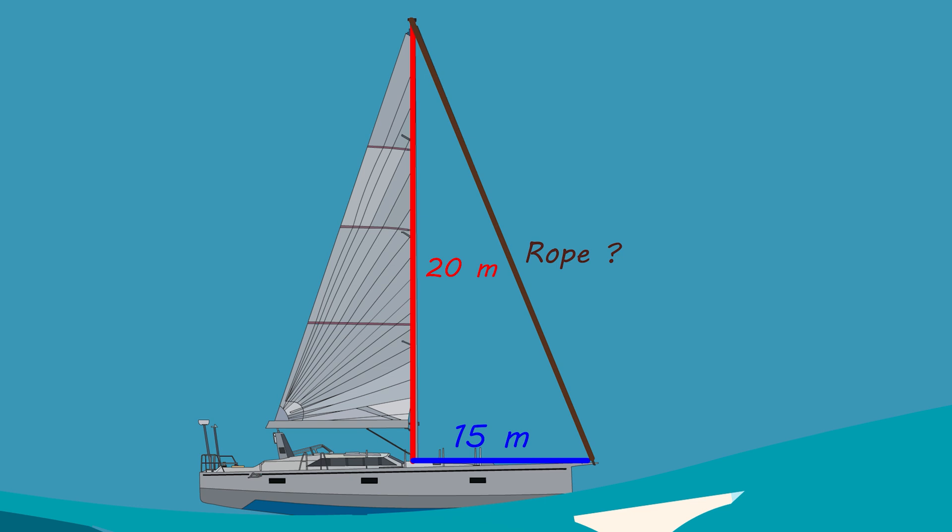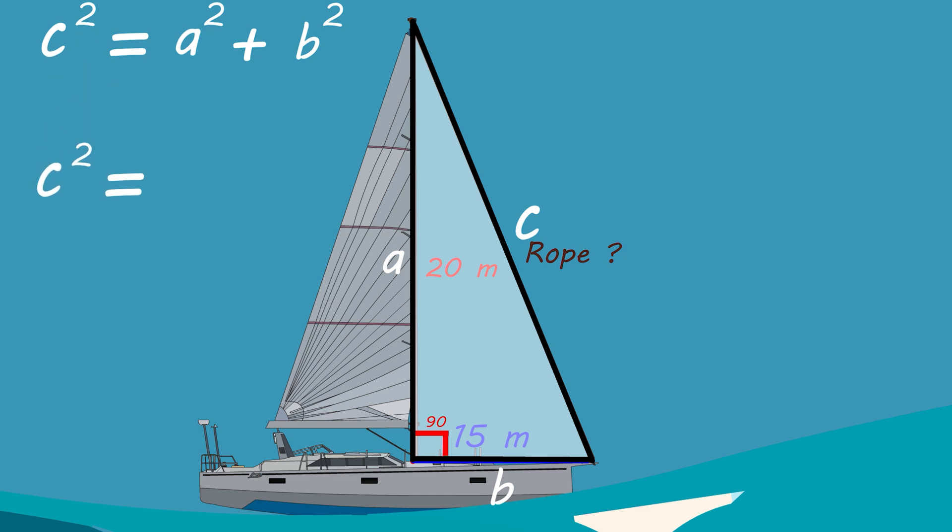As the mast with the rope forms a right triangle with the boat floor, we can apply the Pythagorean theorem to find the rope length. We will refer to the mast length with the symbol a, and for the distance between the mast base and the rope as b. The rope's length will be c. So c square equals a square plus b square. By substituting the values, the equation becomes c square equals 20 square plus 15 square.